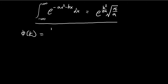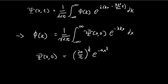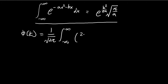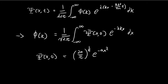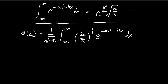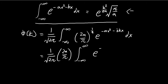The first step is to find φ(k), so we just apply the formula. We have the constants, we have the integral, and then we put in the initial wave function, which is equal to (2a/π)^(1/4) times e to the power of −8x² − ikx dx. This is a direct application of the integral formula. You can see we have an integral of this form — we pull out the constants, and inside the integral we have −8x² which matches our 'a' term, and our b will be equal to ik.